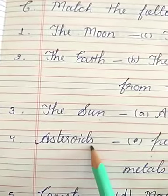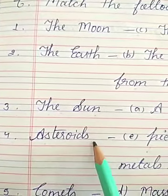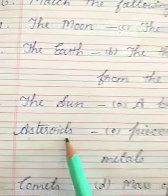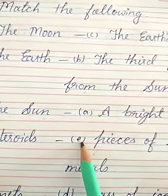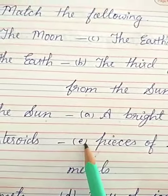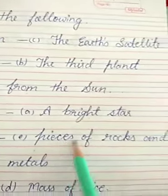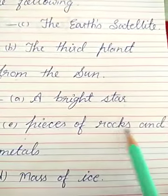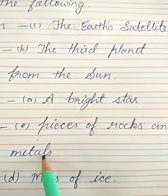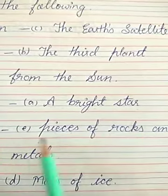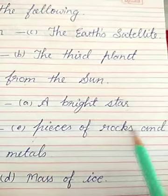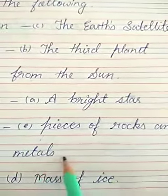Number 4 — Asteroids. What will be the matching for the asteroids? It is Option E. Asteroids are pieces of rocks and metals.